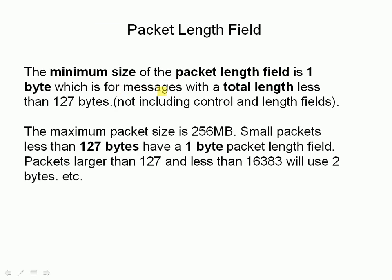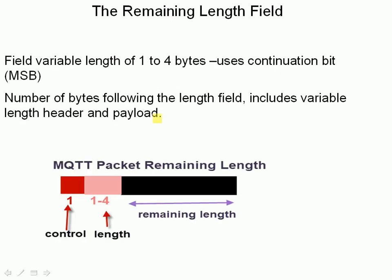The minimum size of the remaining length field is 1 byte and the maximum size is 4 bytes, which gives us a maximum packet size of around 256 megabytes. It's variable length — 1 to 4 bytes — and it uses a continuation bit to determine whether it's actually using additional bytes. The number of bytes following the length field includes the variable header and the payload, as illustrated in this diagram: we've got the control bytes, the remaining length field which is 1 to 4 bytes, and then the remaining length which includes the variable header and payload.